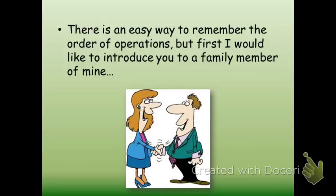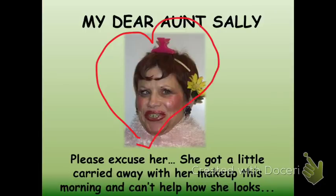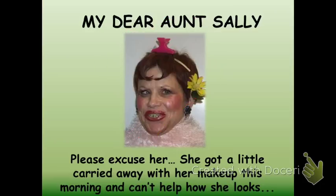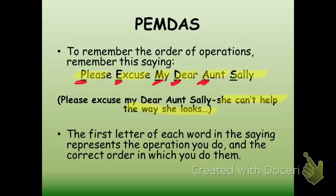There's one easy way to remember the order of operations. I'd like to introduce you guys to a beloved family member of mine — my dear Aunt Sally. Please excuse her; she got a little carried away with her makeup this morning and can't help how she looks. To remember the order of operations, just remember this saying: 'Please excuse my dear Aunt Sally.' The first letter of each word represents the operation you do and the correct order: Please — parentheses; Excuse — exponents; My — multiply; Dear — division; Aunt — addition; Sally — subtraction. PEMDAS.